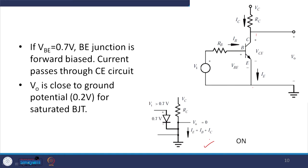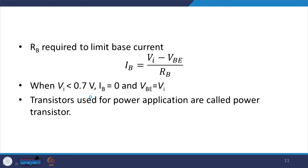In the saturation state, the transistor is in the on condition: a large IC flows through RC, causing a large voltage drop across RC, so VCE almost reaches ground, around 0.2 volts. This property is used to switch the transistor on and off. The base resistance required to limit the base current can be found using: IB × RB = VI − VBE. When VI is less than 0.7 volts, IB is zero and VBE equals VI. Transistors used for power applications are called power transistors.